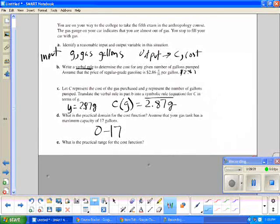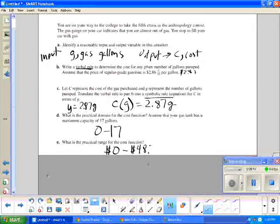The practical range for this, I know that if I was buying no gas, that the practical range would start with 0. And I know if I am buying 17 gallons of gas at $2.87 a gallon, that would give me a cost of $48.79.